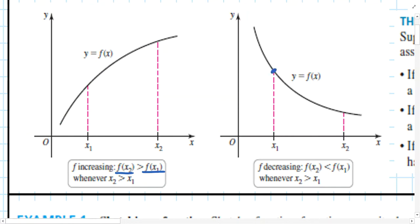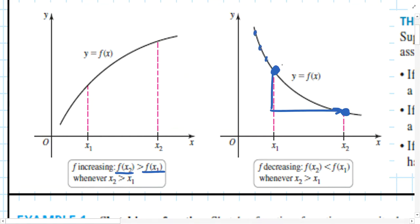Similarly, we could say the same for a decreasing function. The y result at x2 is going to be less than the y result at x1, as long as x2 is on the right. Any coordinate on this line also has a negative first derivative.